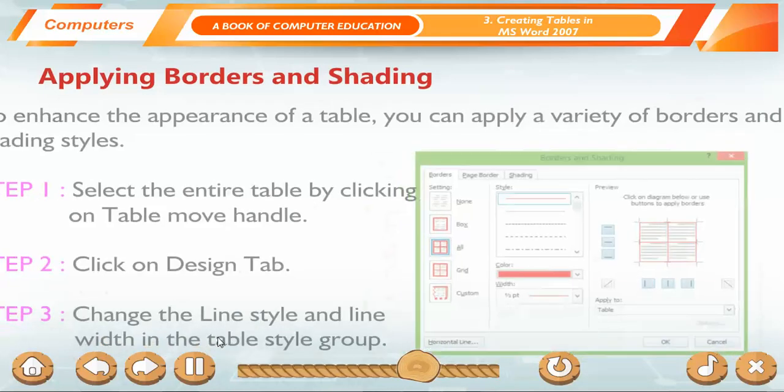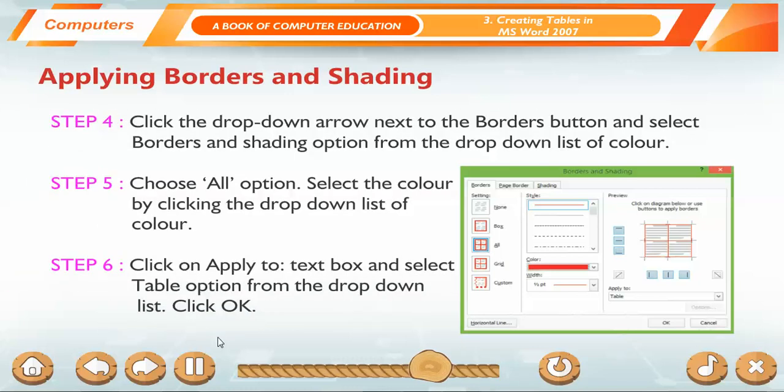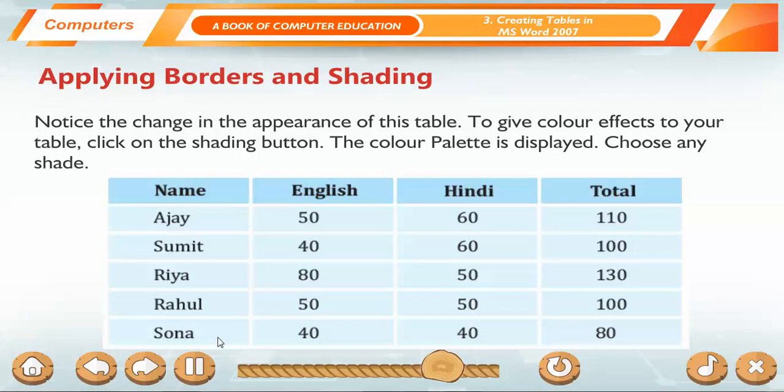Applying Borders and Shading. To enhance the appearance of a table, you can apply a variety of borders and shading styles. Step 1: Select the entire table by clicking on Table Move Handle. Step 2: Click on Design tab. Step 3: Change the Line Style and Line Width in the Table Style group. Step 4: Click the drop-down arrow next to the Borders button and select Borders and Shading options from the drop-down list of color. Step 5: Choose All option. Select the color by clicking the drop-down list of color. Step 6: Click on Apply to Textbox and select Table option from the drop-down list. Click OK. Notice the change in the appearance of this table. To give color effects to your table, click on the Shading button. The color palette is displayed. Choose any shade.